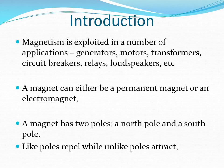Let's begin by stating a few things that we know about magnets. Number one, a magnet can either be a permanent magnet or an electromagnet. Secondly, a magnet has two poles, and we call them the North Pole and the South Pole. Number three, like poles repel, while unlike poles attract.